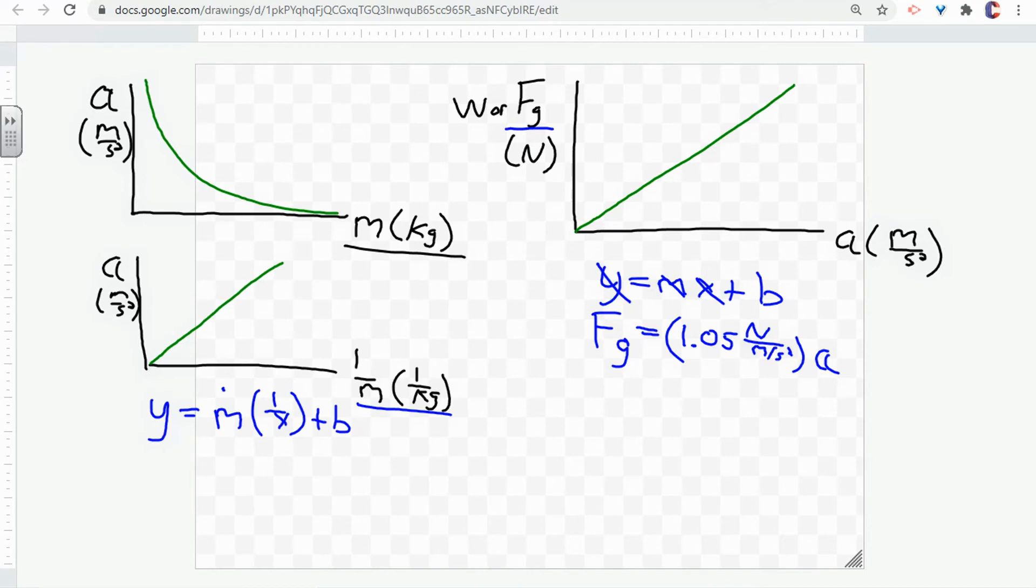Because we graphed 1 over mass to get our straight line graph. So we're going to start with Y equals M times 1 over X plus B.